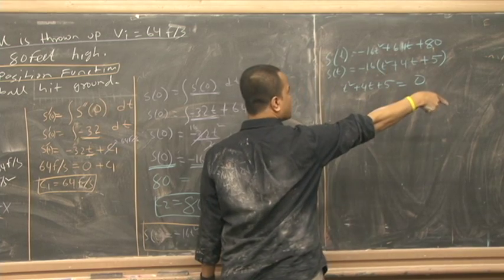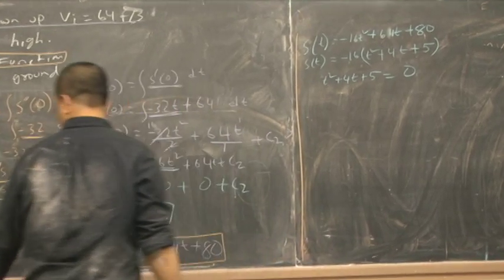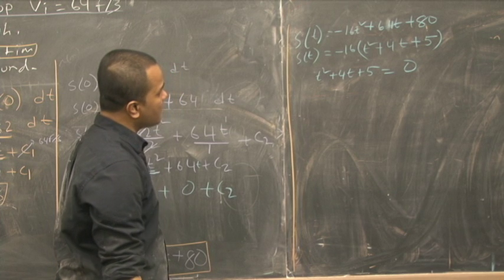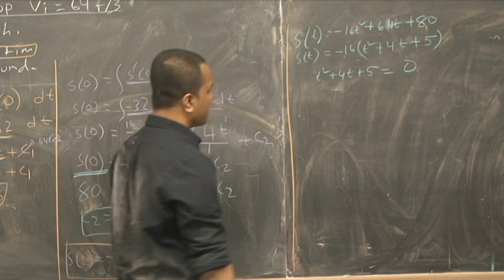We send 16 to the other side, so negative 16 times zero, which is zero. Now, things are easy, we're going to do factoring.